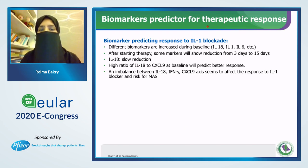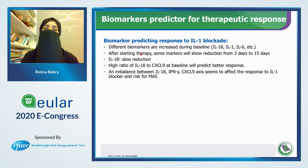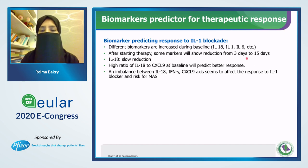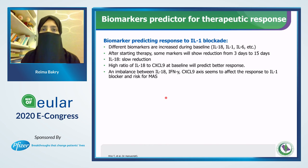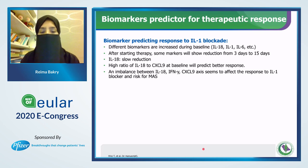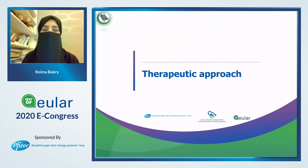The third category is biomarkers as predictors for therapeutic response. Different biomarkers elevated at baseline in systemic JIA include IL-18, IL-1, and S100 protein. After starting therapy, some markers show rapid reduction within three days, and some last to 15 days — in contrast to IL-18, which shows a slower reduction. A high ratio of interleukin-18 to CXCL9 at baseline is a good predictor of better response. An imbalance between the interleukin-18/interferon-gamma/CXCL9 axis seems to affect the response to interleukin-1 blocker and increases the risk of macrophage activation syndrome.